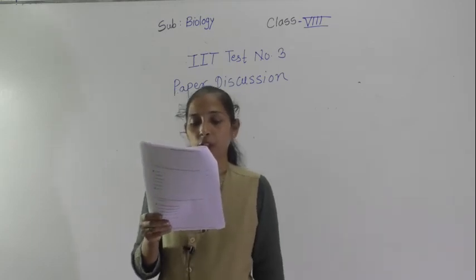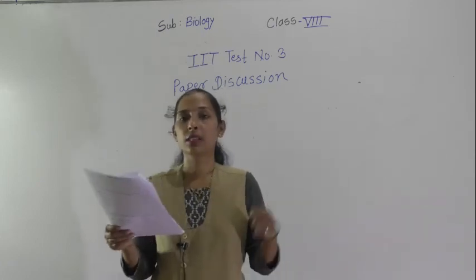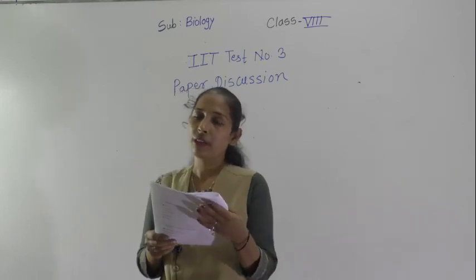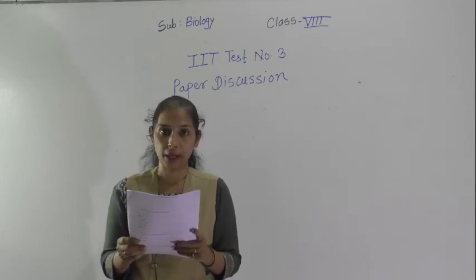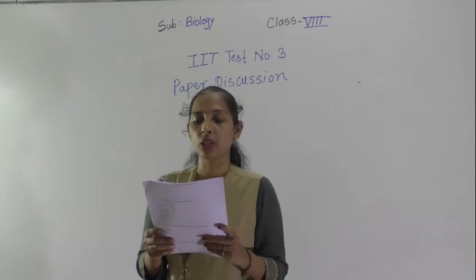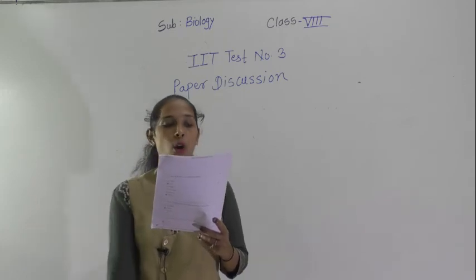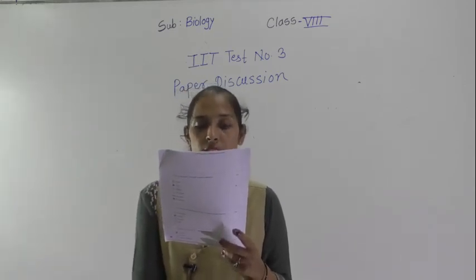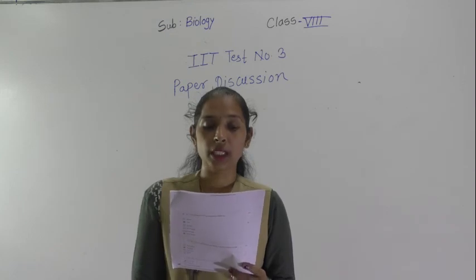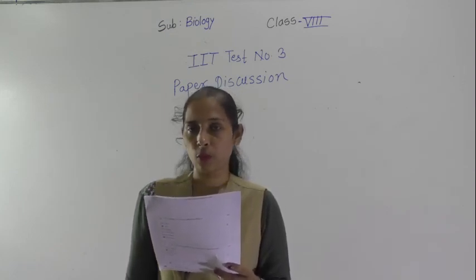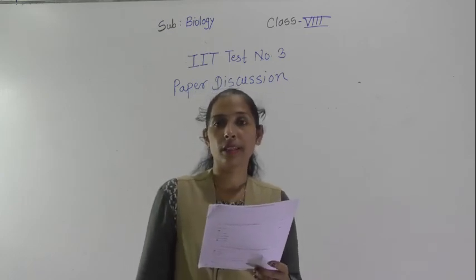Question number 24: which scientist discovered the cell by observing a cork slice? Robert Hooke discovered the cell and first observed a cork slice. Question number 25: which of the following is NOT a function of lysosomes? The options are: breaking down food particles; protection against pathogens; and performs photosynthesis. The correct answer is option C — performs photosynthesis — as lysosomes do not perform photosynthesis. The remaining three options are actual functions of lysosomes.